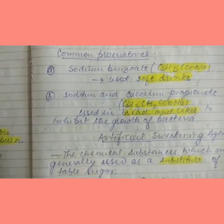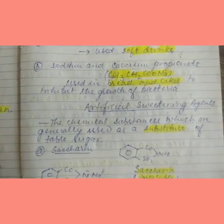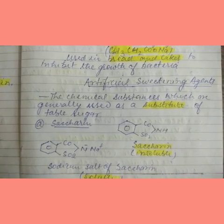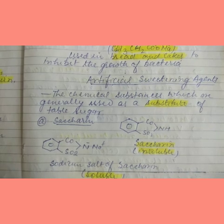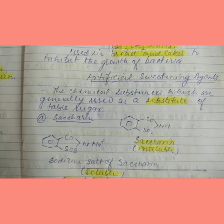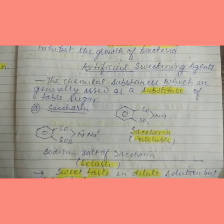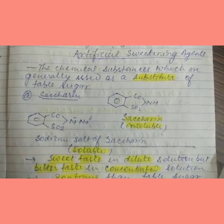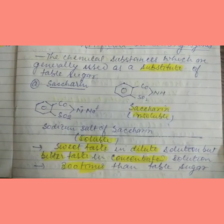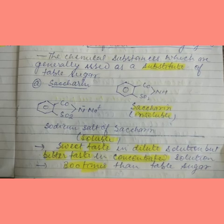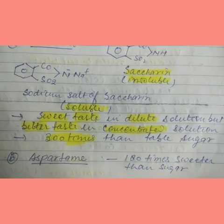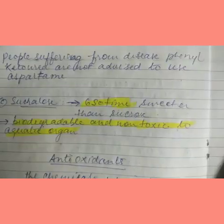Next, we have artificial sweetening agents — chemical substances generally used as a substitute for table sugar. The first one is saccharine, which is soluble, and the second is the soluble sodium salt of saccharine. Saccharine has a sweet taste in dilute solution but a bitter taste in concentrated solution, and it is 300 times sweeter than table sugar.